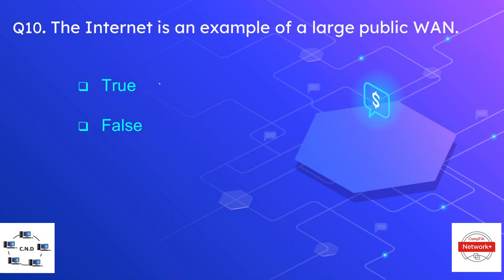Question number ten: the internet is an example of a large public WAN — true or false? The correct option is true. The internet is an example of the largest public WAN.